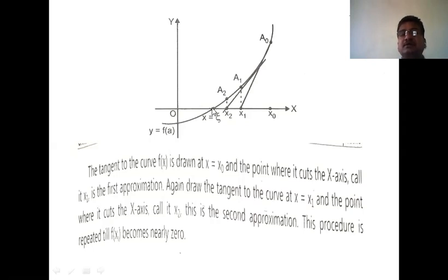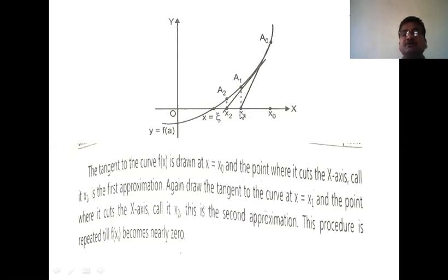The exact root xi is where the curve y = f(x) cuts the x-axis. We take any initial approximation x₀ on the curve, draw the tangent to the curve at that point, and where it cuts the x-axis is x₁. Again, draw the tangent to the curve at x₁; where it cuts the x-axis is x₂, the second approximation.